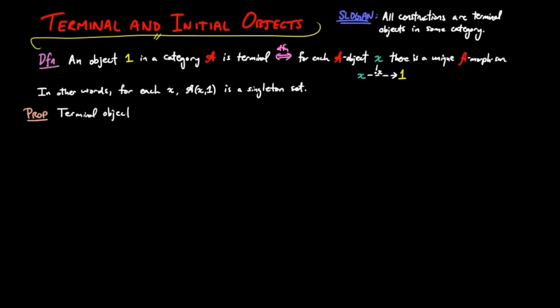And in a category, terminal objects are unique up to unique isomorphism. To see this, let 1 and 1 prime be terminal objects in the category A.